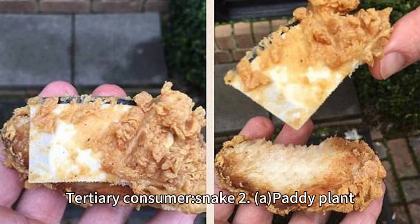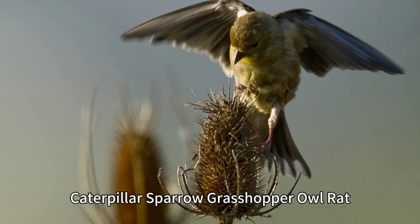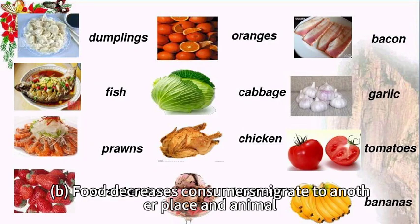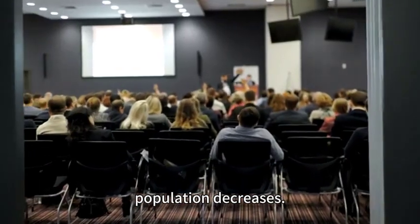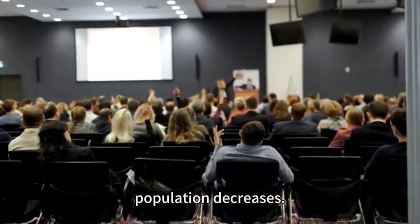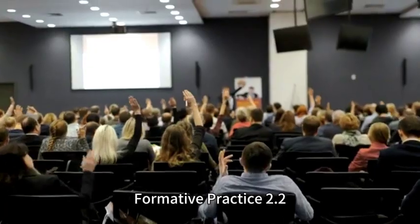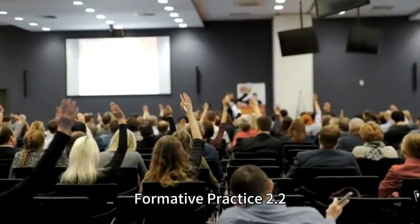Question 2: A. Food chain — Paddy plant, Caterpillar, Sparrow, Grasshopper, Owl, Rat. B. Food decreases, consumers migrate to another place and animal population decreases.